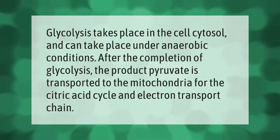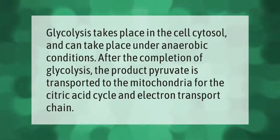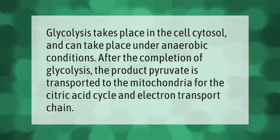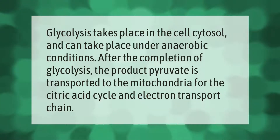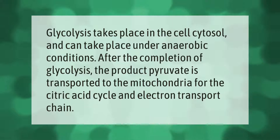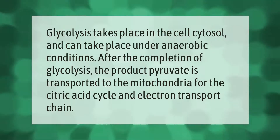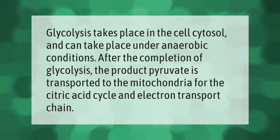Glycolysis takes place in the cell cytosol and can take place under anaerobic conditions. After the completion of glycolysis, the product pyruvate is transported to the mitochondria for the citric acid cycle and electron transport chain.